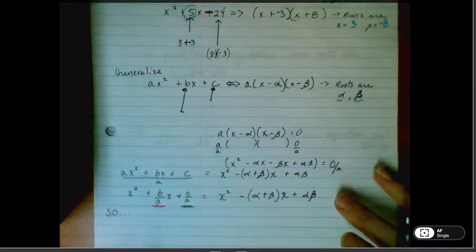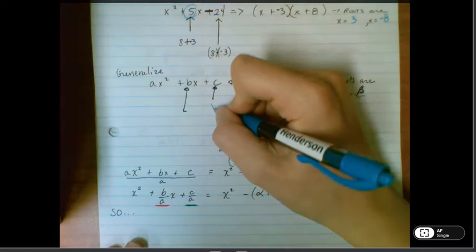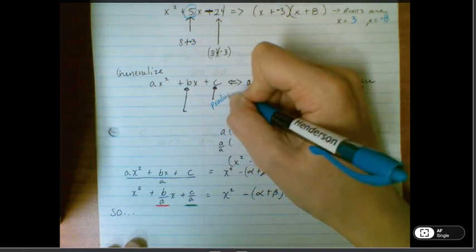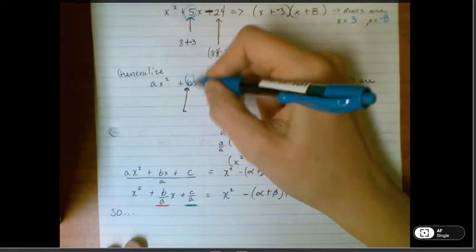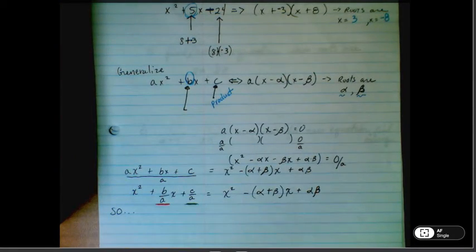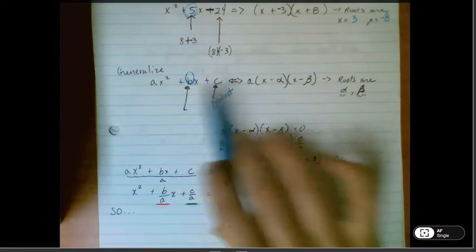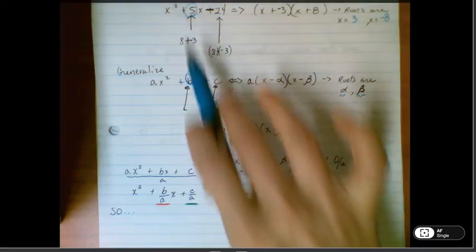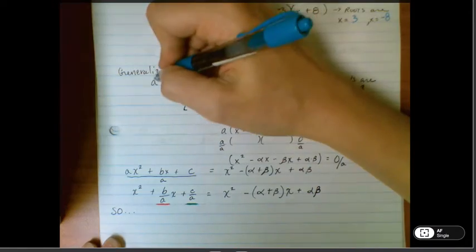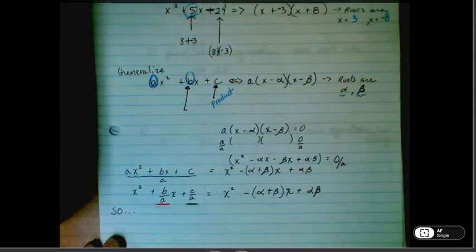So c is going to be our product, we should feel pretty comfortable with that. But b, we've got something going on there, so we're going to see how we can relate the product and the sum of the roots when it's got a leading coefficient other than 1.